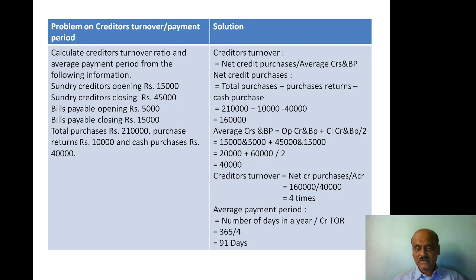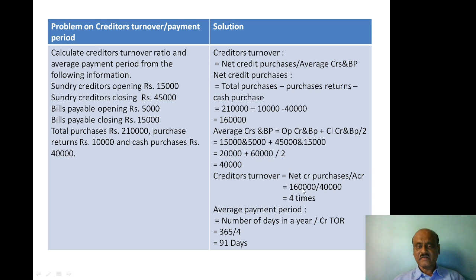Average creditors and bills payable equals opening creditors and bills payable plus closing creditors and bills payable, divided by two. Opening: creditors 15,000 plus bills payable 5,000 equals 20,000. Closing: 45,000 plus 15,000 equals 60,000. So average is 20,000 plus 60,000 divided by 2 equals 40,000. Creditor turnover ratio equals 1,60,000 divided by 40,000 equals 4 times.